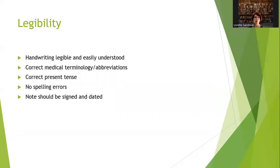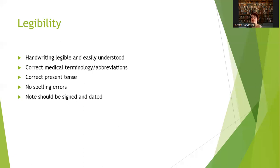Legibility is important. In the era of electronic medical records you can read people's notes more easily, but even typed documentation needs to be easily understood. Make sure your handwriting is legible and your writing is clearly understandable. Use correct medical terminology and approved abbreviations — don't make up your own abbreviations because nobody else will know what they mean. Use correct present tense, as we aim for point-of-care documentation — write what the patient is doing right now, not yesterday.